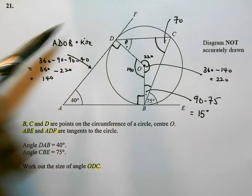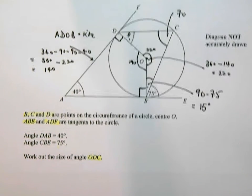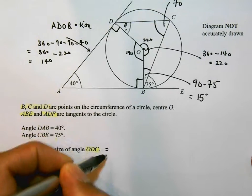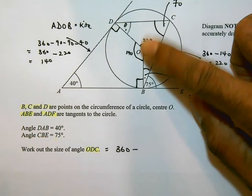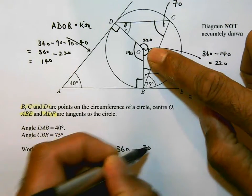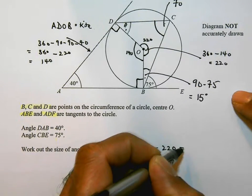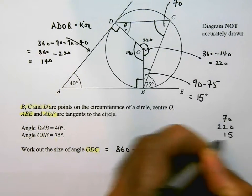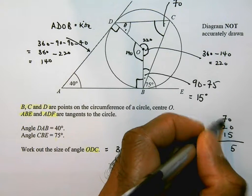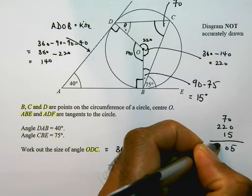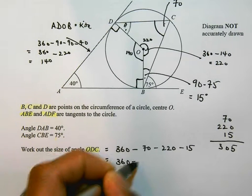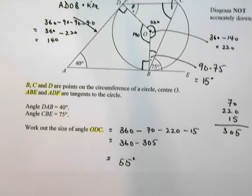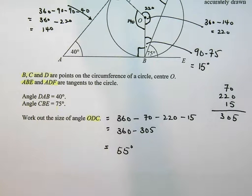Now, to work out this angle ODC, I know the four angles in this arrowhead are going to add up to 360 degrees. So ODC is going to be 360 take away the other three that I know. I know this one here is 70. I know that's 220. And I know this angle down here is 15. I'm going to go off to the side and add those three up: 70, 220, and 15. That's 305. So I'm going to have 360 take away 305, which gives me 55 degrees. So the angle ODC is 55 degrees.